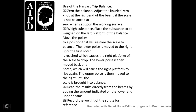Using the Harvard Trip Balance: zero the balance by adjusting the zero knob at the right end of the beam. If the scale is not balanced at zero when set up, place the substance to be weighed on the left platform. Move the poise to the position that restores the scale to balance. The lower poise is moved to the right until the first notch is reached causing the right platform to drop; move it back one notch which will cause the right platform to rise. Move the upper poise to the right until balance is achieved. Read the result directly from the beams by adding the amounts indicated on the lower and upper beams. Record the weight for reference.